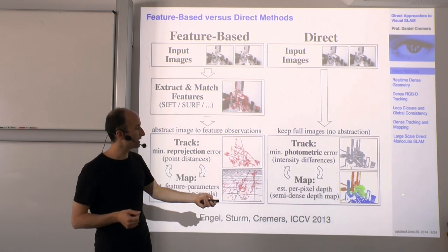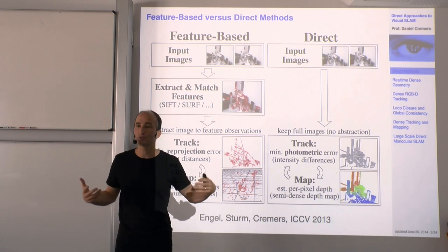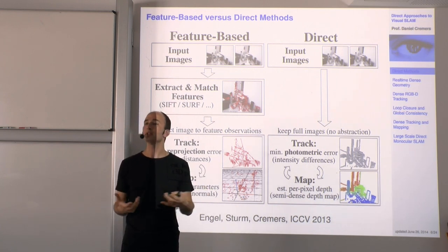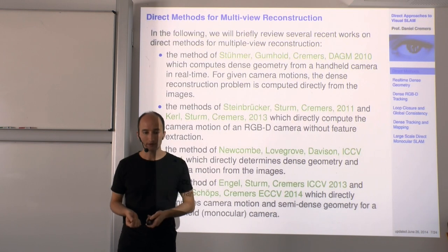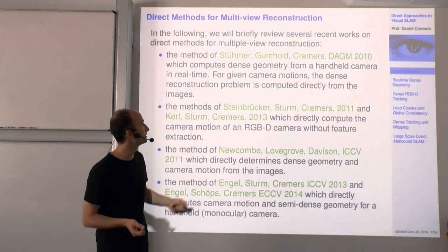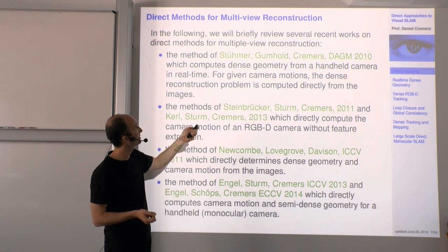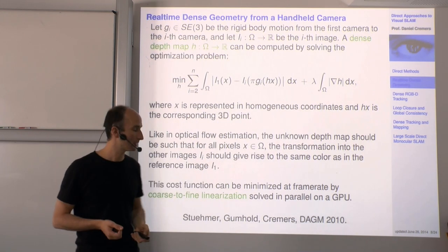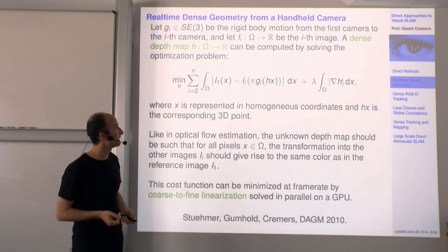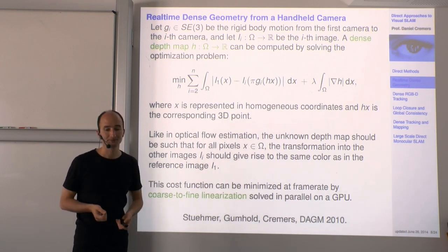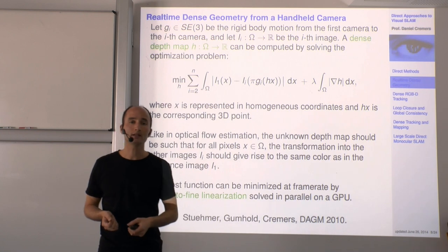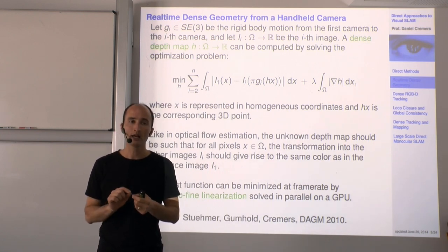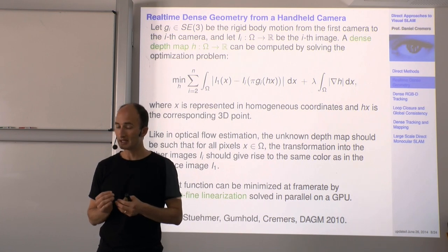The way dense approaches handle constant-color regions is by filling in information. The first example of a direct approach I want to mention is the work of Stümer, Gumhold, and Cremers published in 2010. The idea is to circumvent feature extraction and directly go to dense geometry.